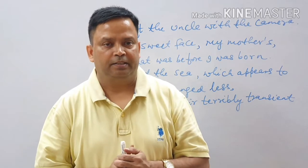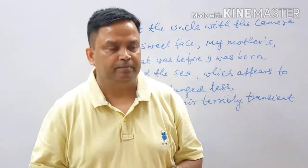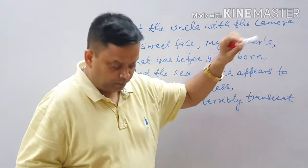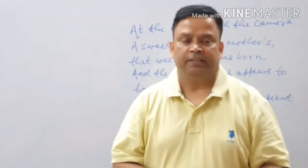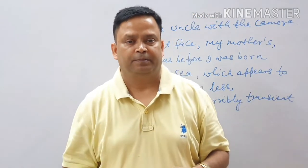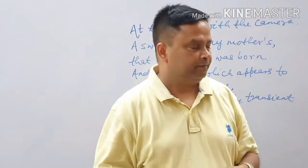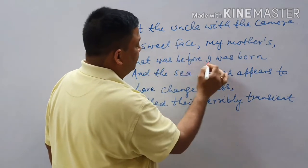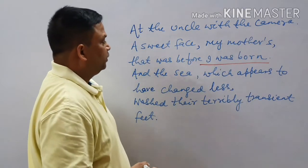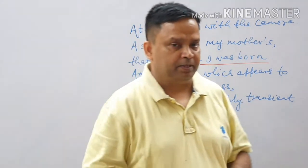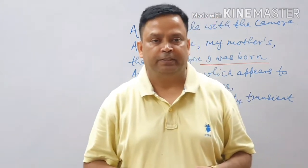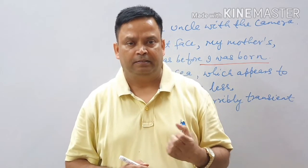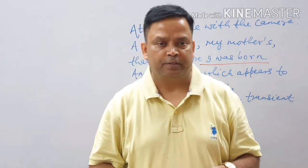The three girls were smiling through their hair at the uncle with a camera. The poet's mother's uncle was there with a camera to click their photograph. It was a beach area and the blowing of waves may have caused the hair to cover their faces, so they were just smiling through their hair to get a photograph. Then: 'a sweet face, my mother's, that was before I was born.' The poet was not born at that time because her mother herself was of 12 years — and she had a pretty, sweet face at that age.